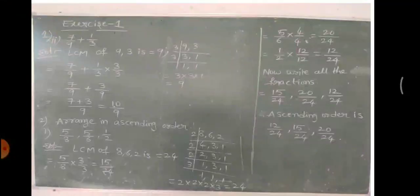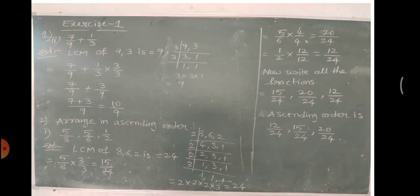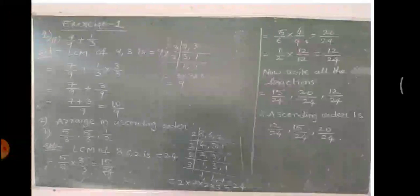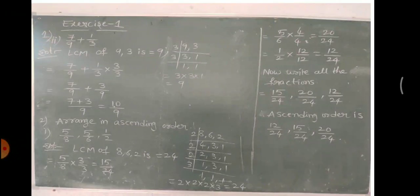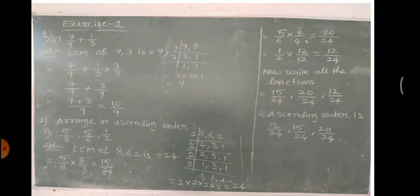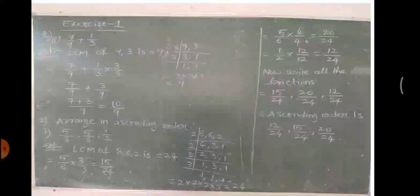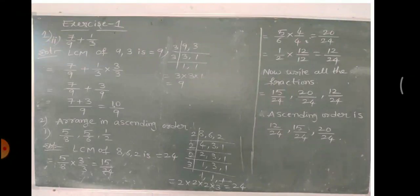Now, arrange in ascending order. We have three fractions: 5/8, 5/6, and 1/2. Every fraction has a different denominator, so these are all unlike fractions. To write them in ascending order, we first need to find the LCM of 8, 6, and 2.